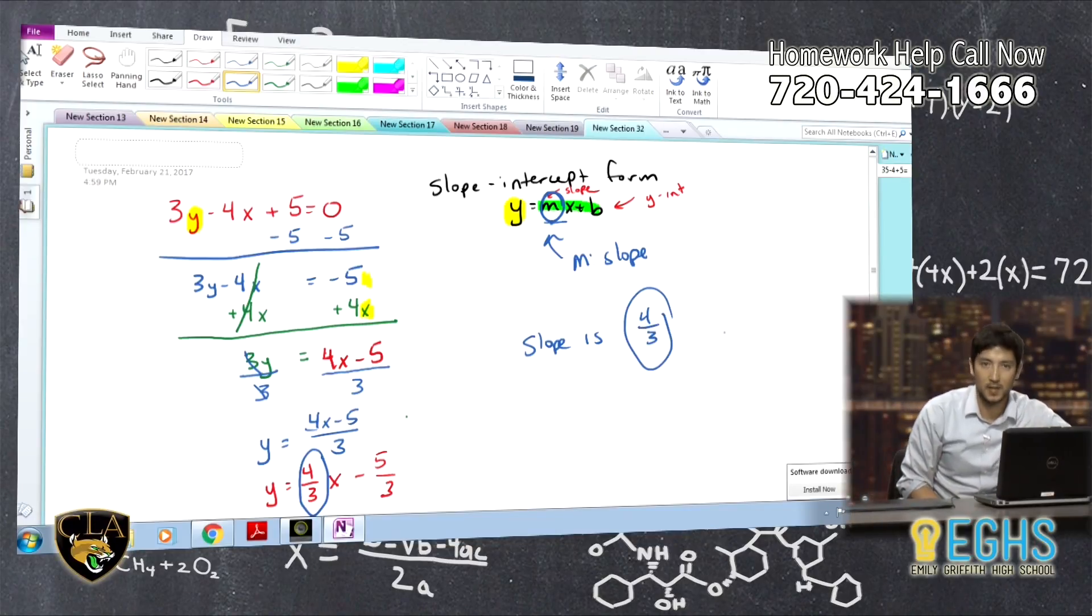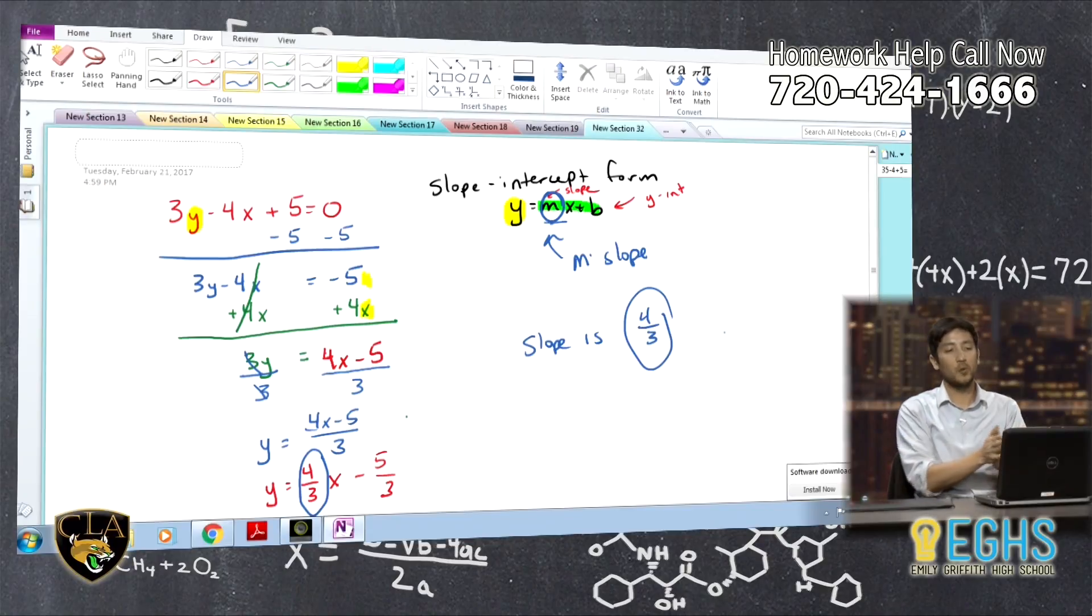And kind of going back to what we talked about at the beginning, the reason why we do slope intercept form, if I look at this equation that was written, this doesn't have a name, right? No. It's not standard. It's not point slope. It's just a linear equation. Yeah.